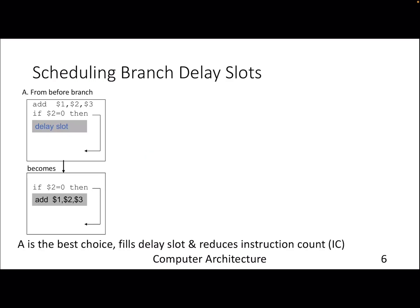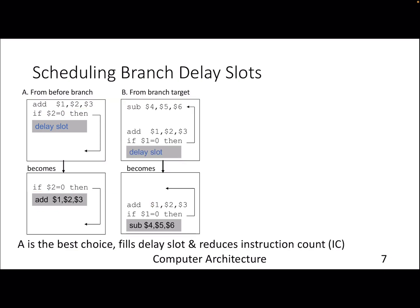Branch delay slots are scheduled by the compiler — the compiler inserts these instructions. Let's look at the possibilities. Option A talks about the branch delay slot having an instruction from before the branch — something completely independent of the branch. Irrespective of whether the if-condition is true or false, this instruction should be executed. Instead of the original order, the compiler can reorder so this instruction becomes instruction one and the next becomes instruction two in temporal order.